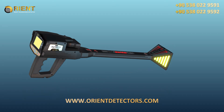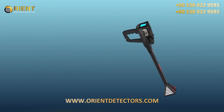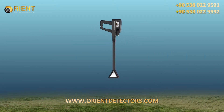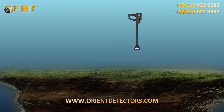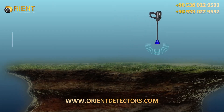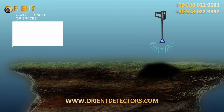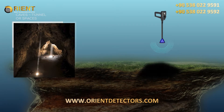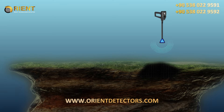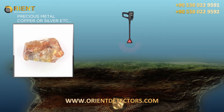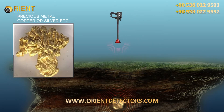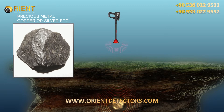That is, depending on the target that the VST probe is passing over at that moment. For example, the LED lights will light up in blue when passing over a cavity or space such as a tunnel, and light up red when passing over a precious metal such as copper or silver.